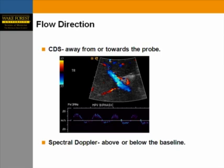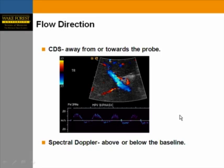This slide shows the flow direction we appreciate on an image. We see the grayscale in the background, the overlay of the color Doppler, and the spectral wave Doppler at the bottom. So we have the combination of all three in the same view.